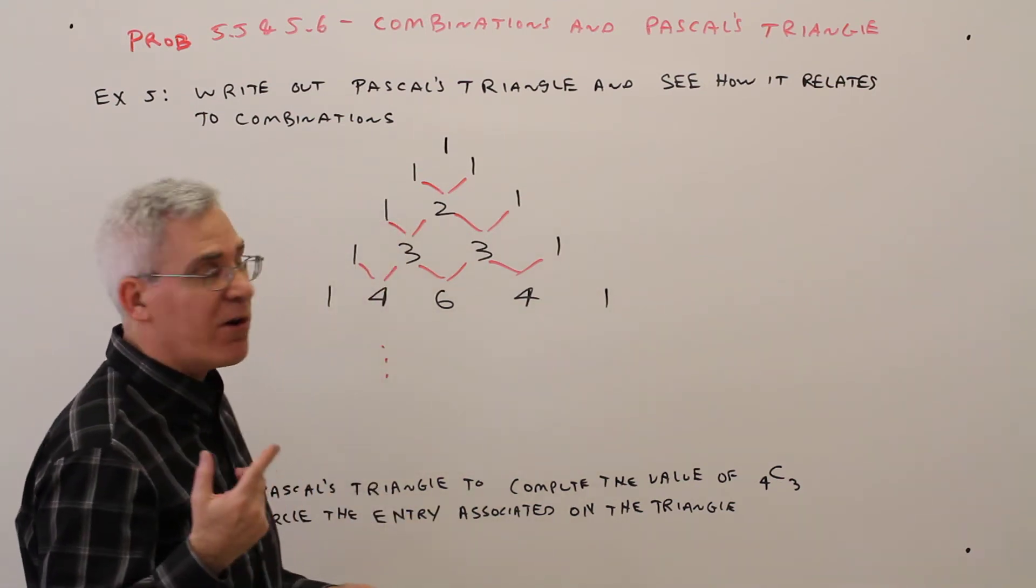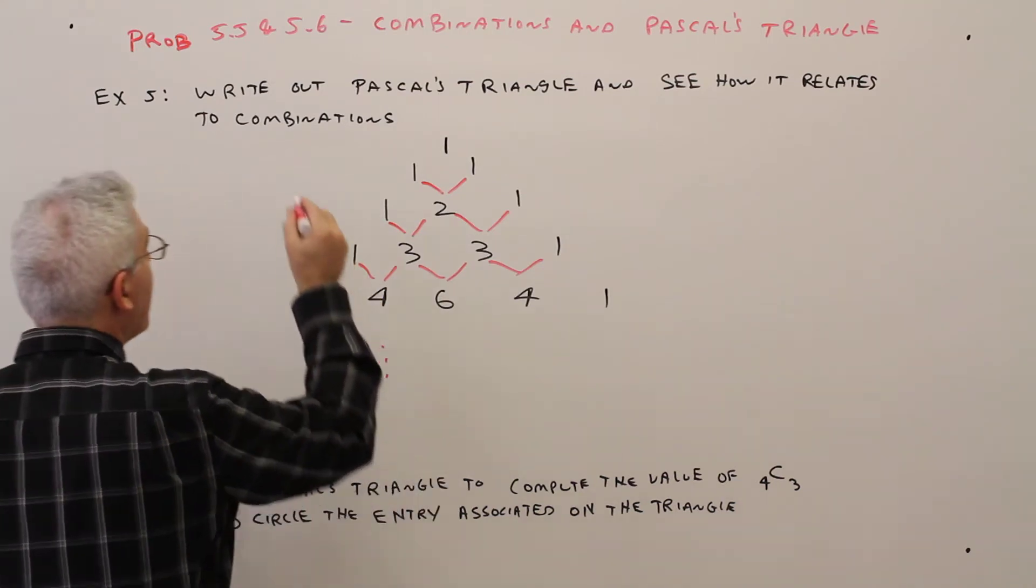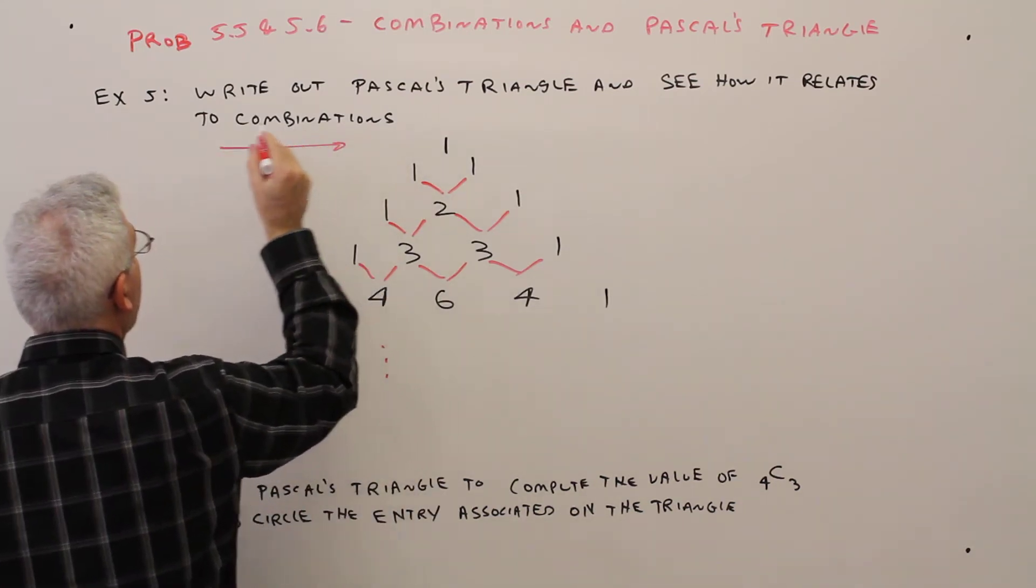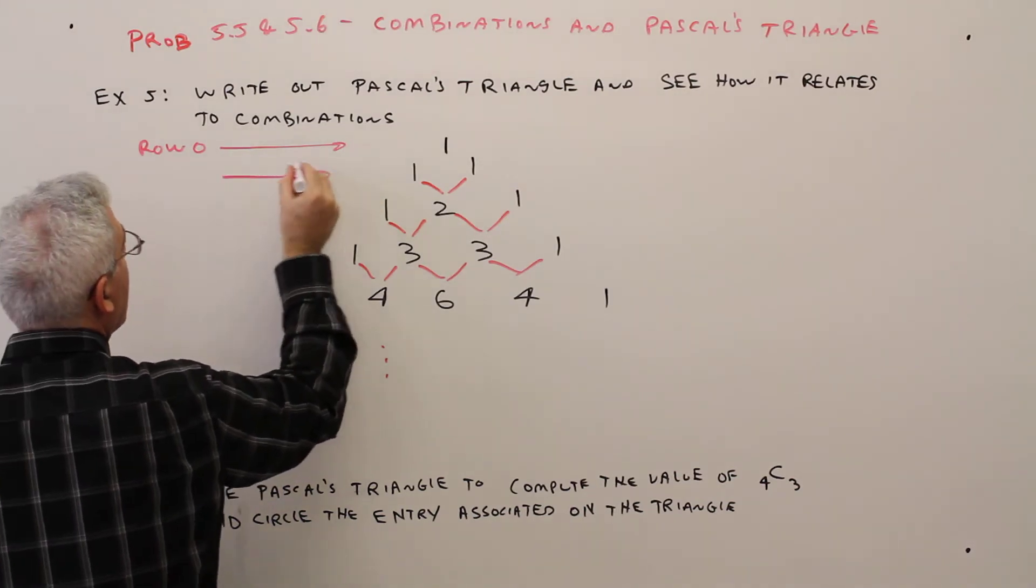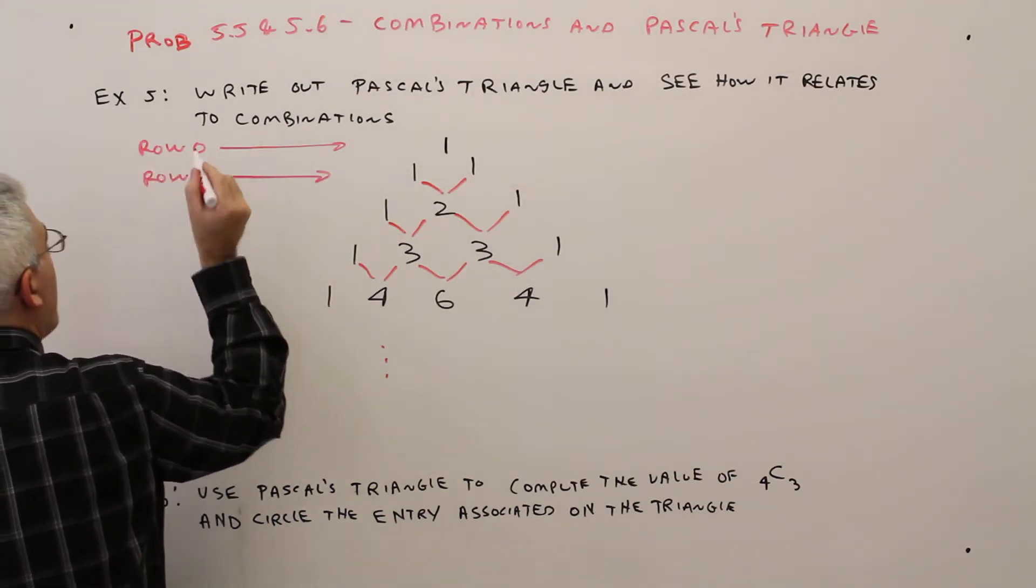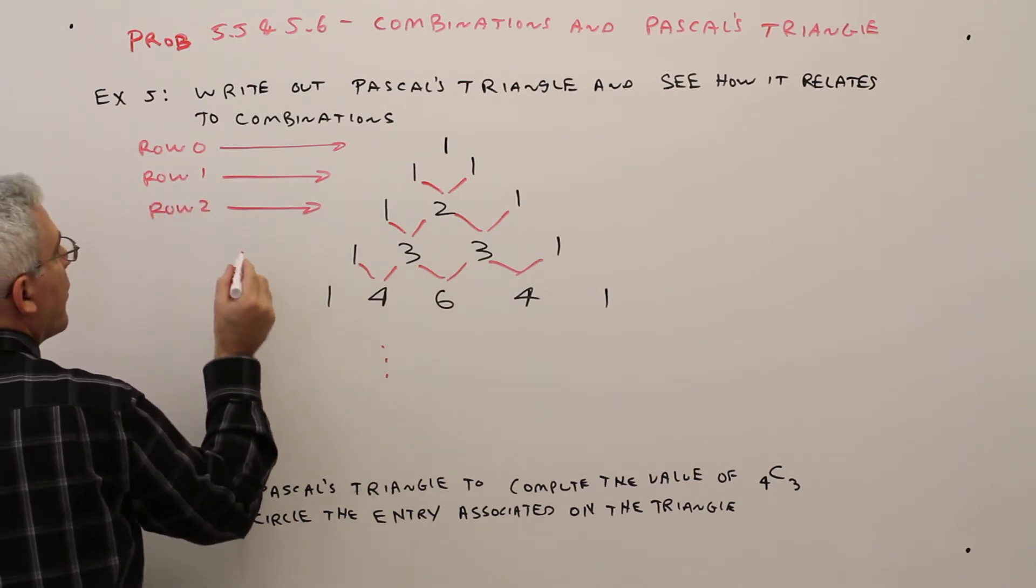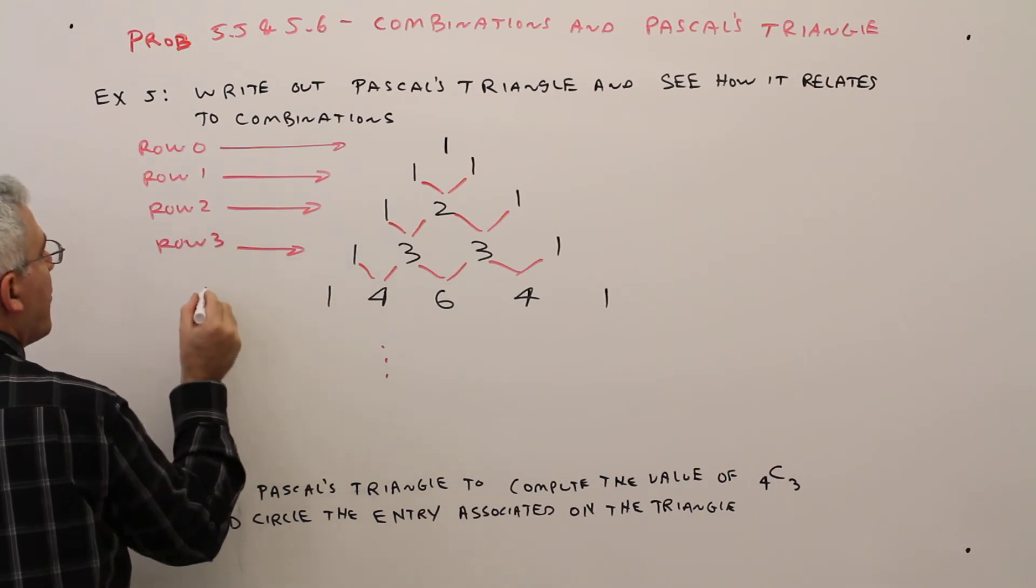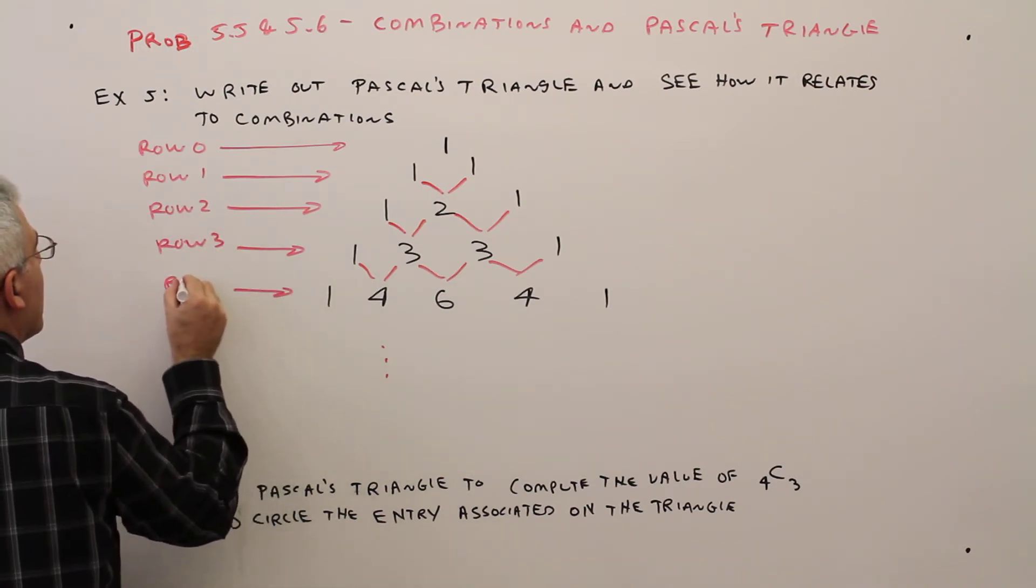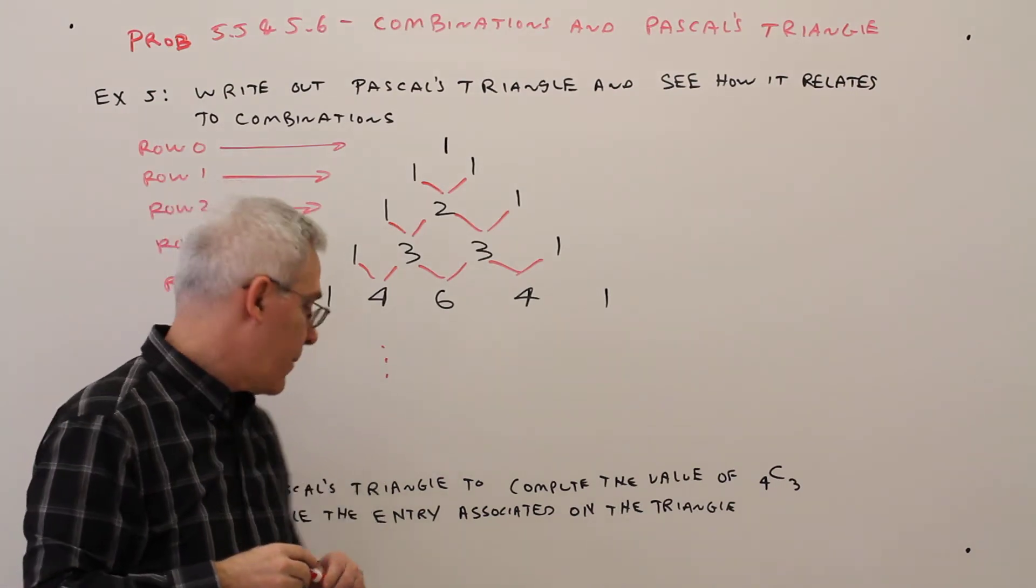And then one very important thing, we start at row 0. So that's a little bit different. So I'll just say that's row 0, row 1, row 2, row 3, and row 4, etc.